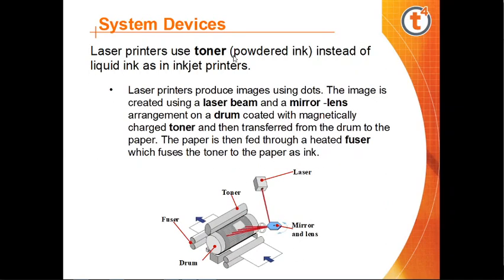Laser printers use toner powder instead of liquid ink, which is different from inkjet printers. Laser printers produce images using dots. The image is created using a laser beam, a mirror, and a lens arrangement on a drum coated with magnetically charged toner, which is then transferred from the drum to the paper.